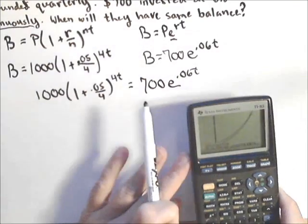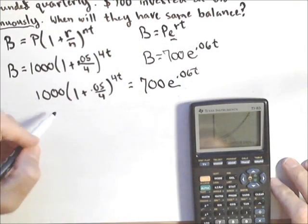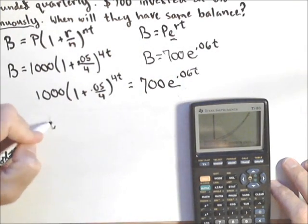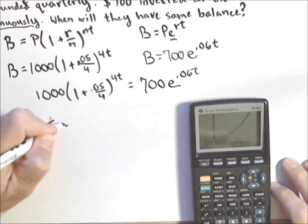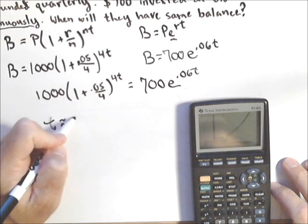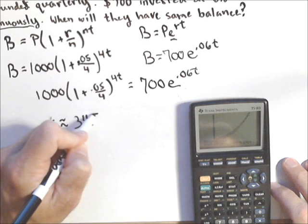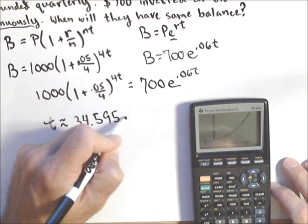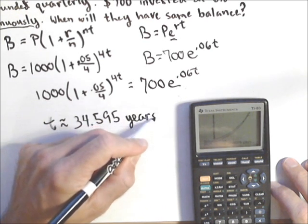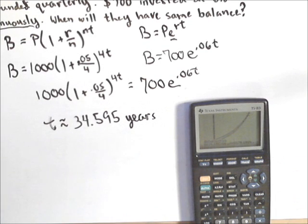I know it's not the greatest picture, but I got that T is about 34.595 years. So that's how long it's going to take at 6% continuously to catch up with 5% quarterly.